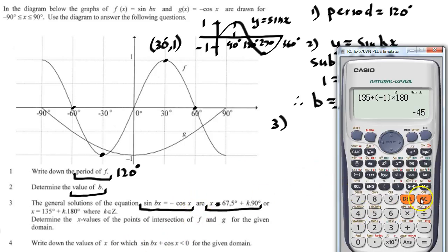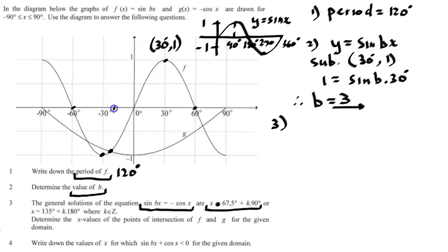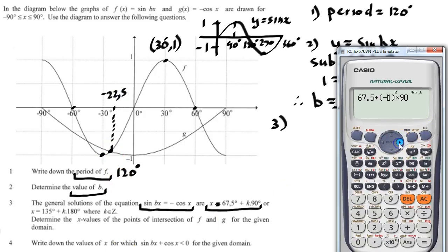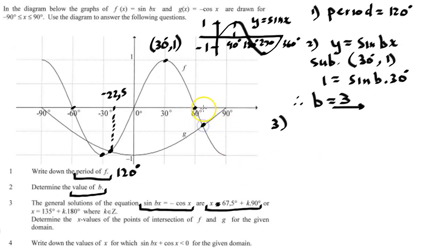Now the best way for us to do this would be to let's substitute 67.5 plus open and close bracket for the k times 90 degrees. Now let's go and substitute integer values. So let's start off by putting -1 there and we get an answer of -22.5. You'll see -22.5 is right here. So that's now going to be one value, -22.5 degrees is one intersection point.